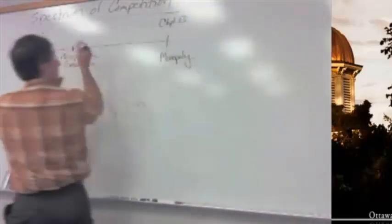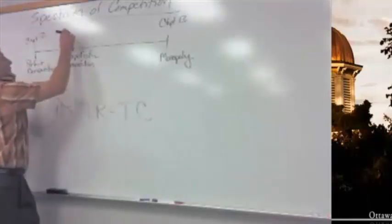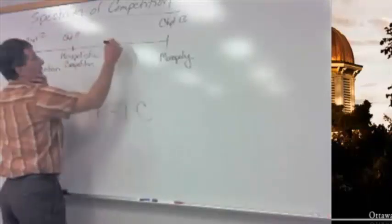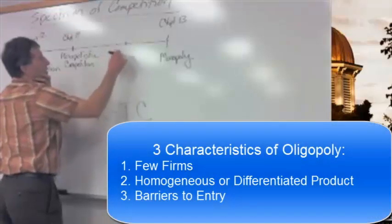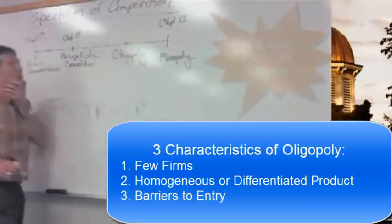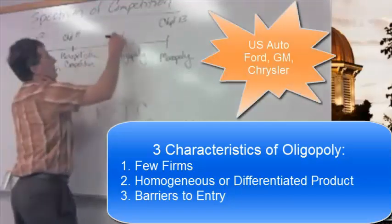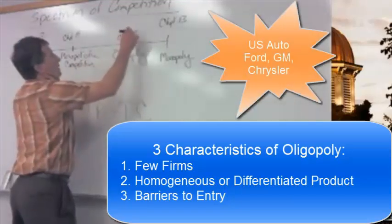And then another hybrid is called oligopoly. And that'll be chapter 15.